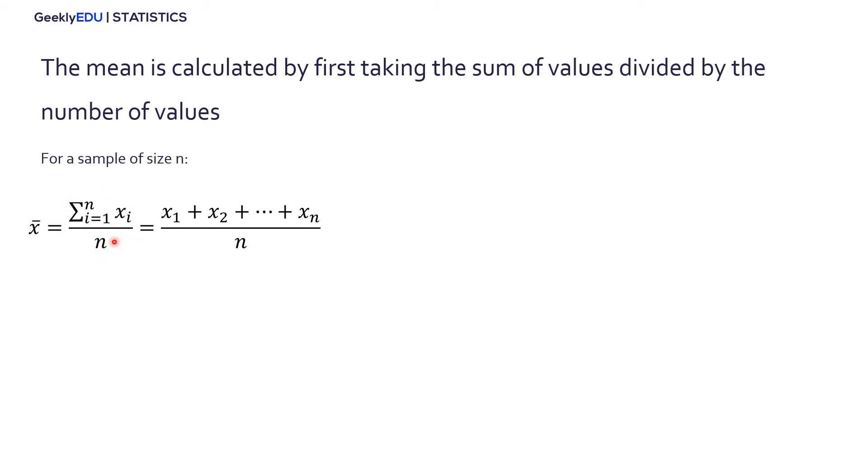Another way we could say this, which is how most people remember it, is this formula here, which is x sub 1 plus x sub 2 plus dot dot dot plus x sub n all over n. So the sample size here is the denominator, it's n.